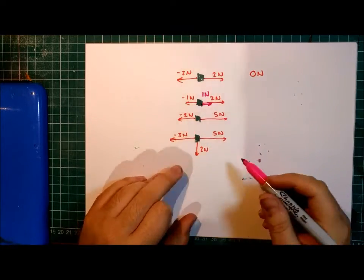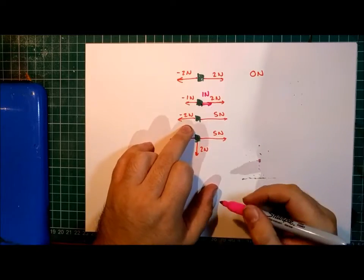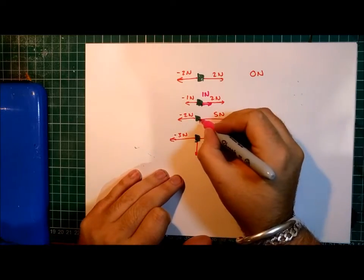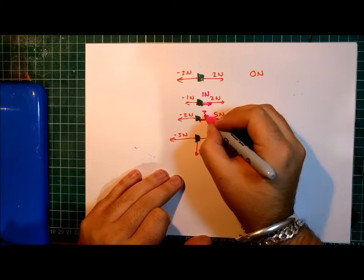Then, the next one, minus two plus five makes three. So, we'd have a resultant force here of three newtons.